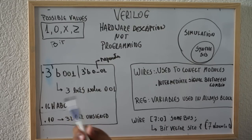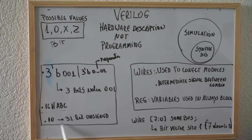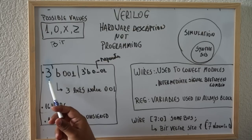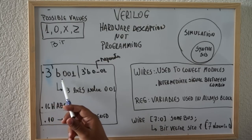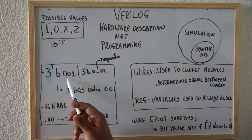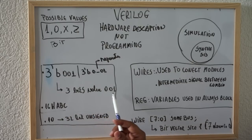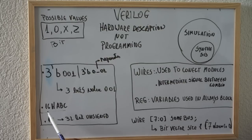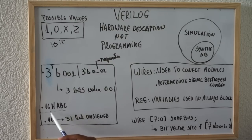How do you create a constant? How do you create a value in Verilog? An option is just to put a number. A number by default will be 32-bit unsigned. You can use this format where you show the number of bits, the type bit, and put, for instance, 001. This is 3 bits with the value 001. Or, for instance, if you want to create a hexadecimal value, you put H for hexadecimal, ABC, and you say here that these have 16 bits.